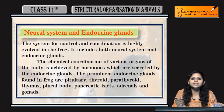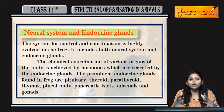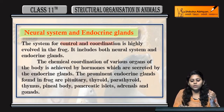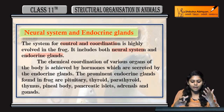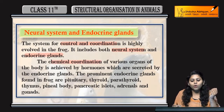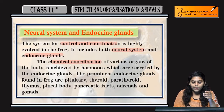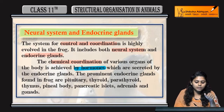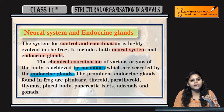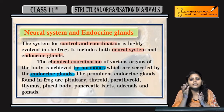Now coming to the neural system and endocrine system of frogs. जितने भी control and coordination होती है in frogs, वो include करता है neural system and endocrine system. Neural system and endocrine system सारी body को control करता है and coordinate करता है accordingly. Chemical coordination होती है between various organs of the body, कैसे होती है वो by hormones. Hormones क्या है — secretion है, कहां से होती है — secrete endocrine glands से.